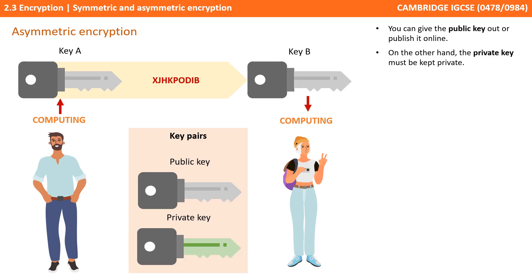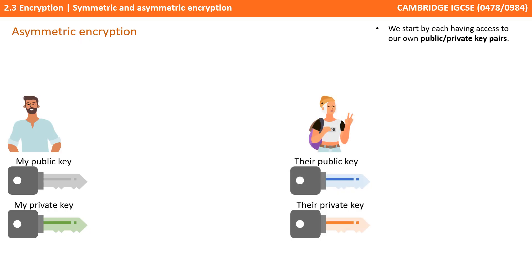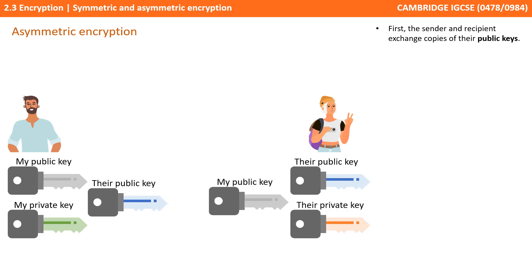Anyone can access your public key. However, you should never send your private key to anyone. We start by each person having access to their own public-private key pairs. The first thing that happens is the sender and recipient exchange copies of their public keys. There's no issue with this, of course, as the public keys are just that — they are public. The keys can be sent via any method; you could literally email them to each other. We don't need to worry about someone intercepting them.